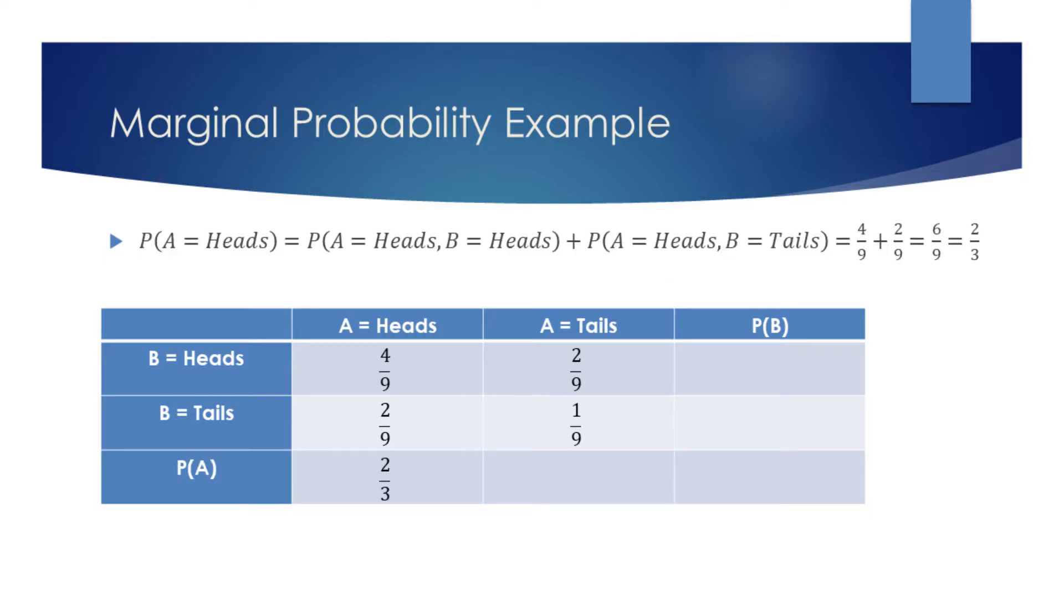Let's now find the probability for the coin A to display heads. From the table, we can see that there are a total of two outcomes where A displays heads. One is when A and B both display heads with probability 4 9ths.